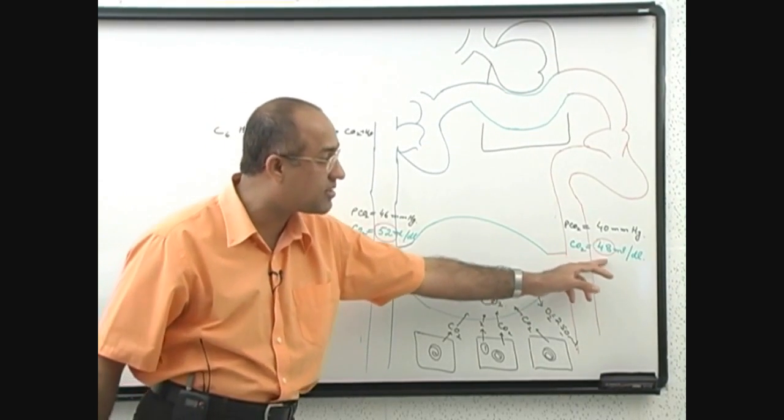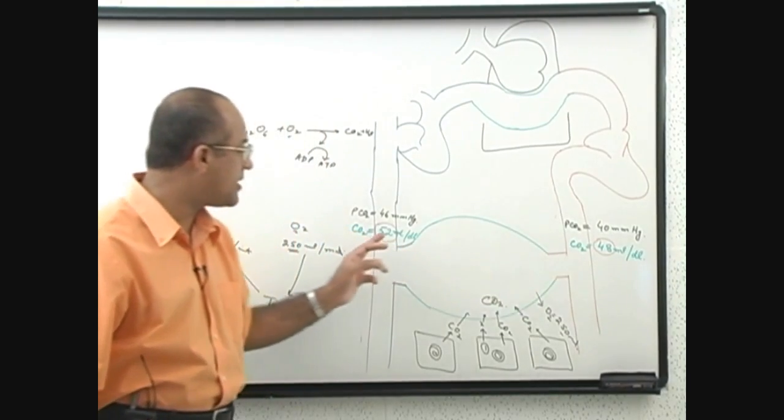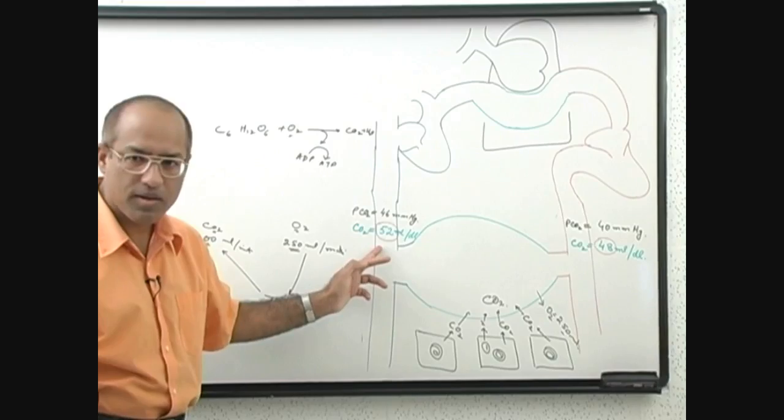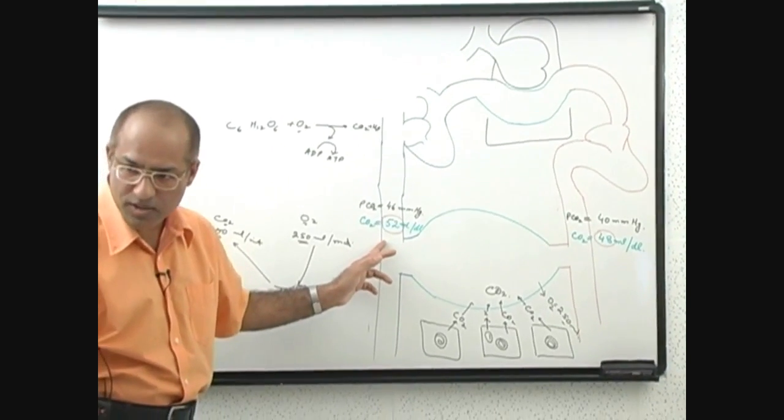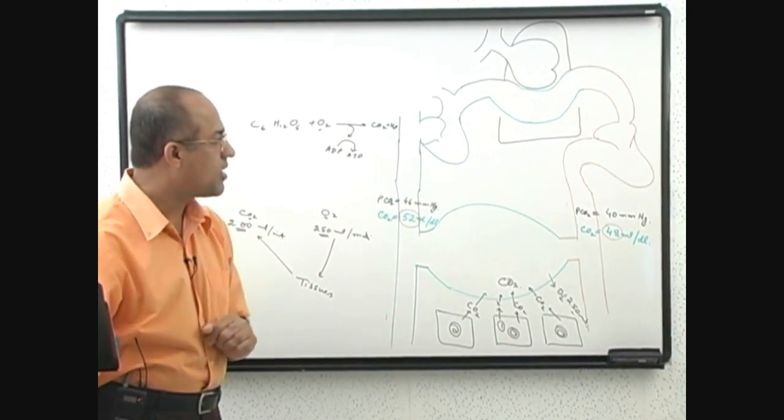The amount of content of carbon dioxide in 100 ml of the arterial blood is 48, and on the venous side it becomes 52. No problem up to here, okay?